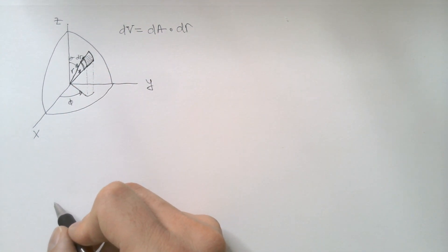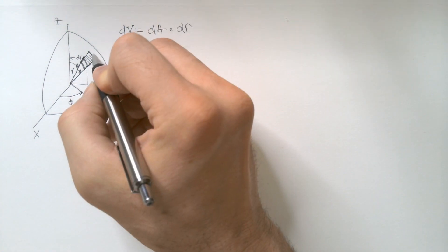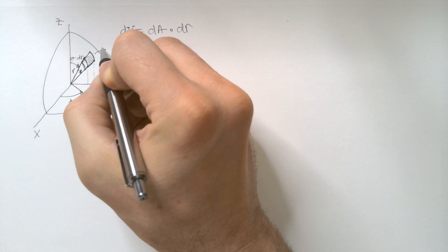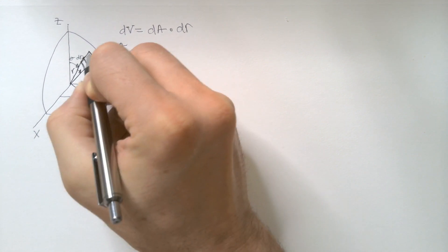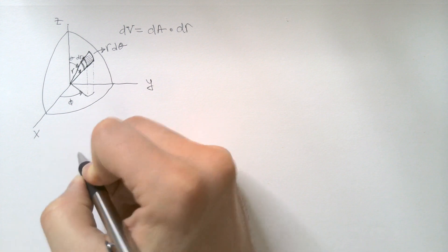That's the radian measure of an angle. So, this over here, this side is r times dθ. This side as well as this side over here.